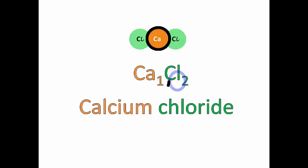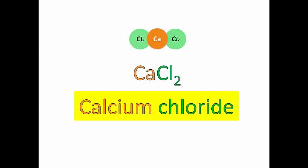That's why we have Ca. We could write Ca1Cl2, but we leave the one out. We just say CaCl2. The name is still calcium chloride.